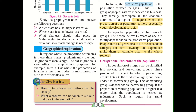Then we have the occupational structure of population — occupation means what work people are doing. The population of a region can be classified into working and non-working groups. Those who are not in jobs or a profession, despite being in the productive age group, come under the non-working group. This non-working group is dependent on the working group. If the proportion of the working population is higher in a region, then the population is termed as industrious and such a region has rapid development.